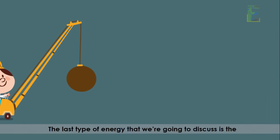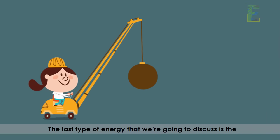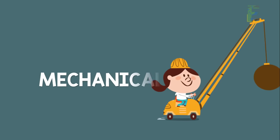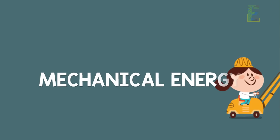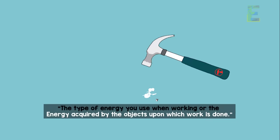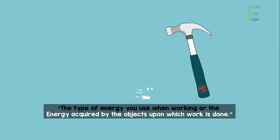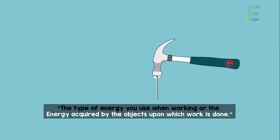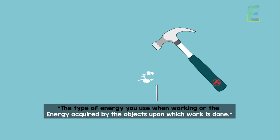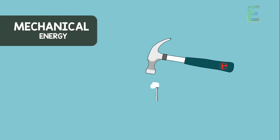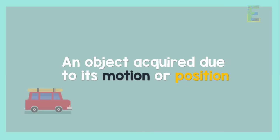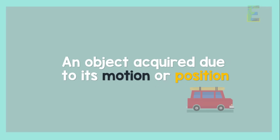The last type of energy we are going to discuss is mechanical energy. The energy acquired by objects upon which work is done is known as mechanical energy. Mechanical energy is the type of energy that an object acquires due to its motion or position.